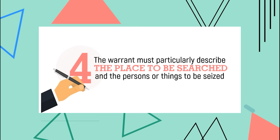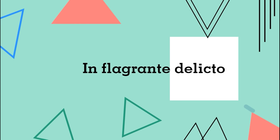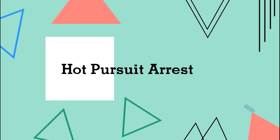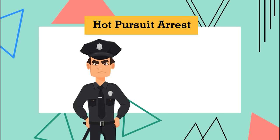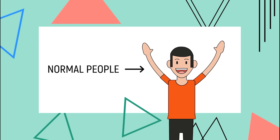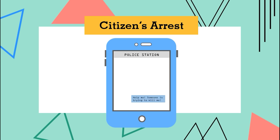Another important term is warrantless arrest — an arrest without a warrant. This is valid in the following cases. First, in flagrante delicto: the person to be arrested has committed, is committing, or is attempting to commit an offense. Second, the hot pursuit arrest: the policeman should have personal knowledge that the suspect committed a crime. Last, a prisoner who escaped from prison. It is also important to note that normal people like you and me can also arrest someone — this is called a citizen's arrest, a lawful warrantless arrest performed by a civilian. However, this is not recommended because it might be dangerous. The best thing to do is report the crime to the police instead of acting on your own.